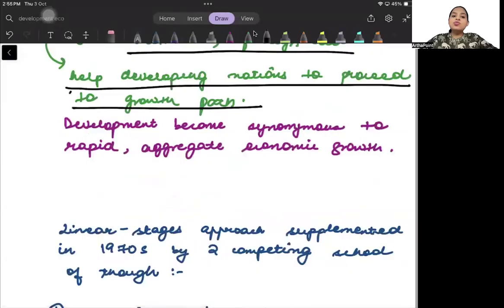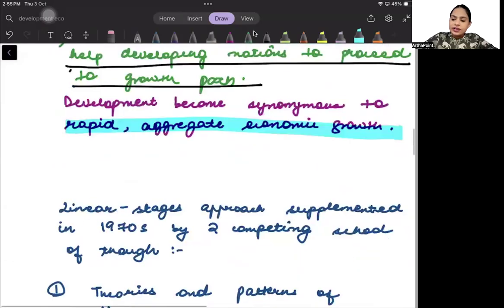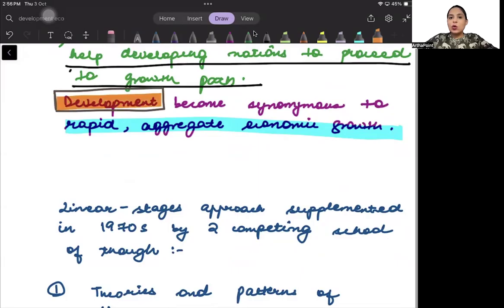Development has become more synonymous to rapid aggregate economic growth. Remember, we said that development and growth are different things. Development goes ahead and stands for the overall thing in which we look at health, education, income, everything. But growth is only related to income. But during this period, the 1950s and 1960s, when we are talking about the linear growth models, development and economic growth were synonymous to each other.